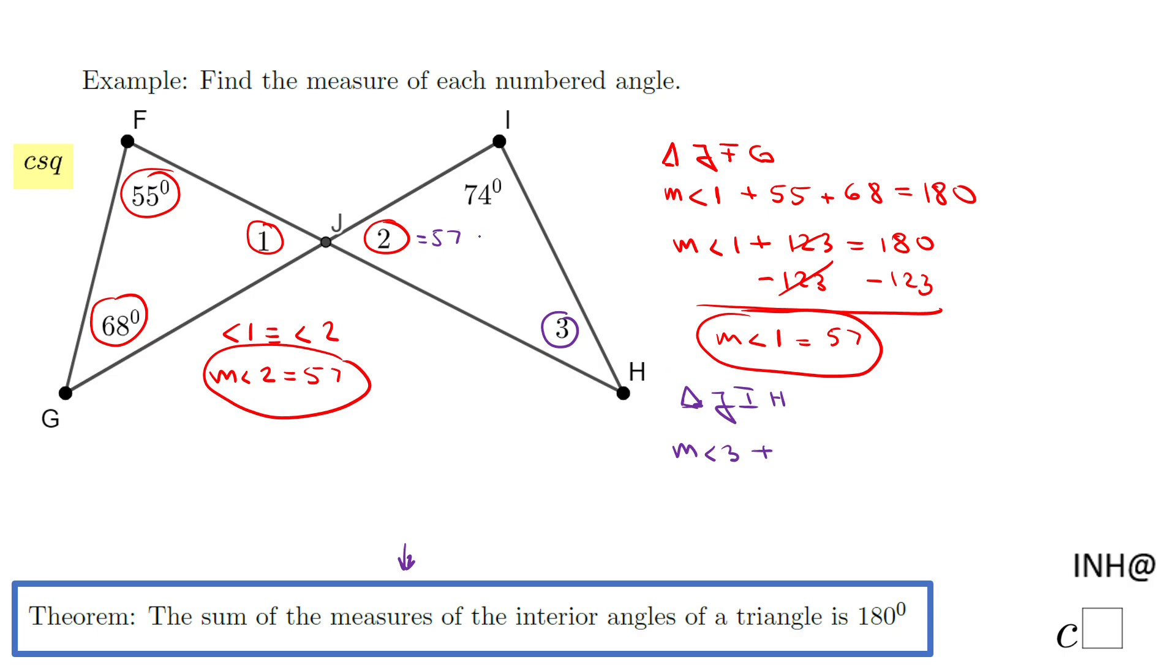plus these 57, the measure of angle 2 we just found out, plus these 74, equals 180. And now again, we're going to combine the two values, 57 and 74. We're going to add them, that is 131, equals 180. The last step: we're going to subtract 131 here, and we have the measure of angle 3